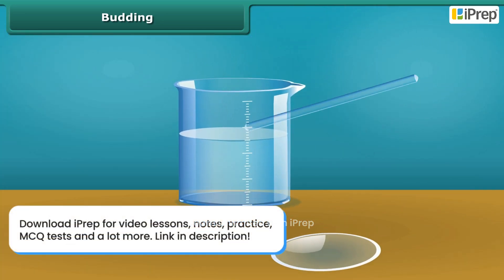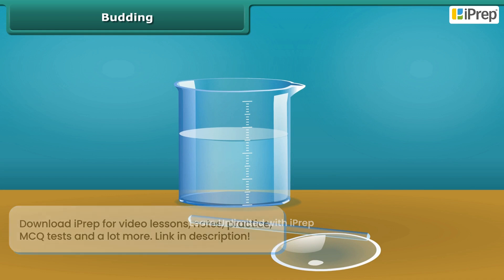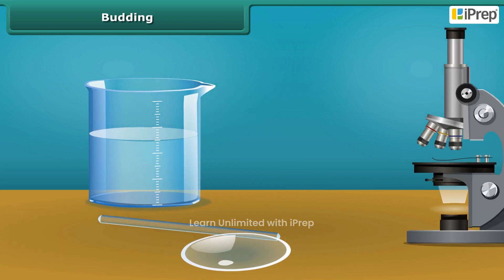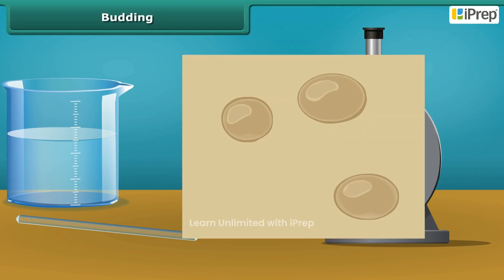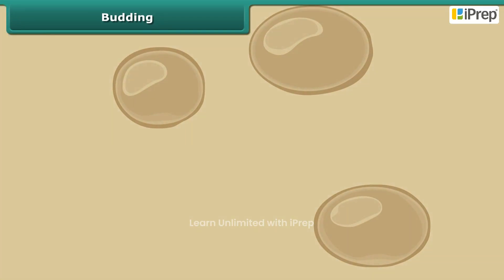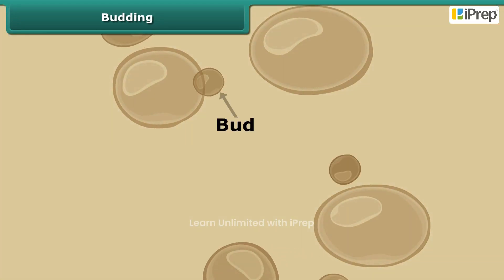After an hour or so, put a drop of this liquid on a watch glass and observe under a microscope. You'll observe new yeast cells formed. The small bulb-like projection you see coming out of the yeast cell is called the bud.